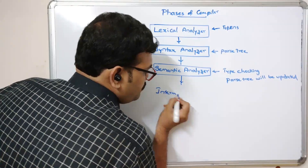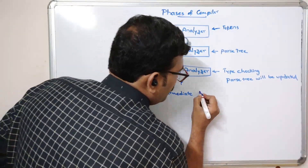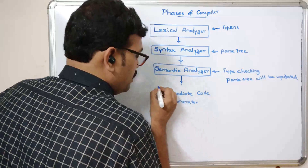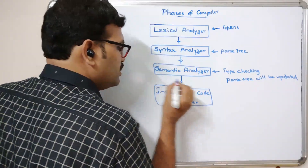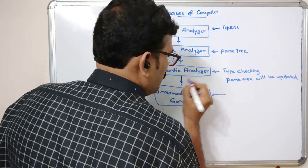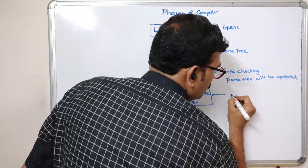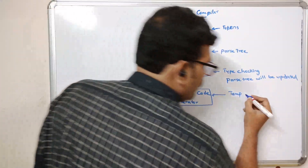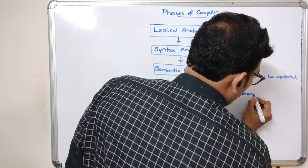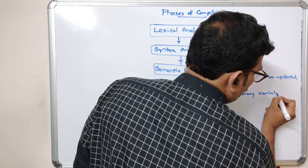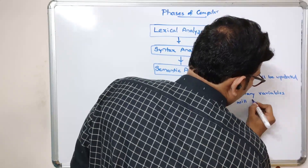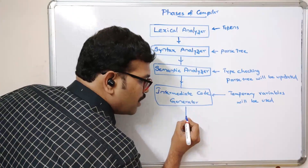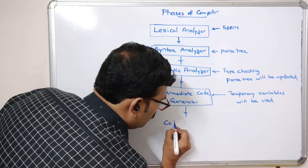The updated parse tree will be given as input to the intermediate code generator. In the intermediate code generator, temporary variables will be taken and the instructions will be evaluated. Some sort of code will be generated here, and from that it will go to code optimization.